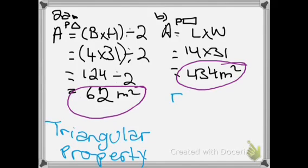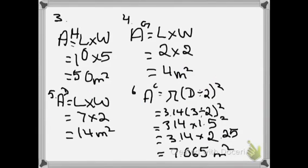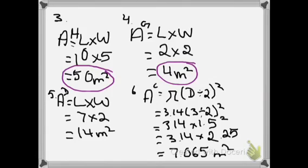This one was for the rectangular part and this one for the triangular part of the property. For the area of the house, it's length times width: 10 times 5, which gives us 50 meters squared. For the area of the garage, it's length times width: 2 by 2, which equals 4 meters squared.